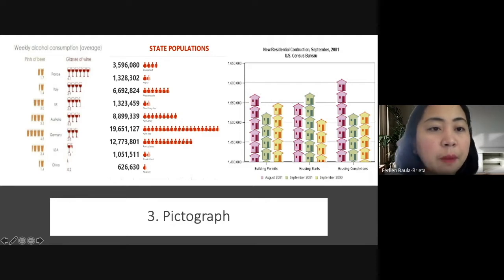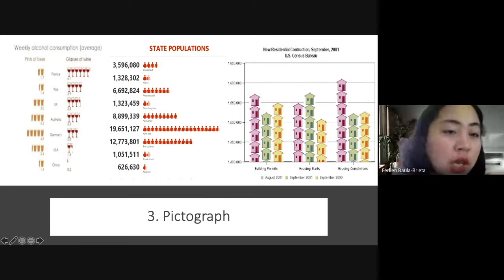So for example, here in our presentation, we have weekly consumption average. So we have here pints of beer and glasses of wine. So we have used the pints of beer to represent France, Italy, UK, Australia, Germany, USA, and China.